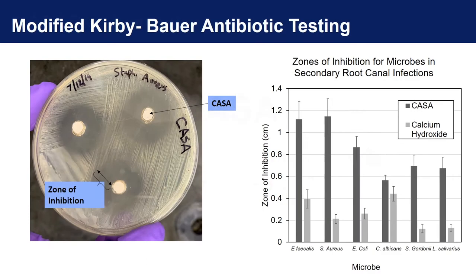I conducted Kirby-Bauer antibiotic tests in which CASA was found to be a more effective antimicrobial agent than calcium hydroxide. More notably, CASA was more than double the effectiveness of calcium hydroxide against ephacallus.